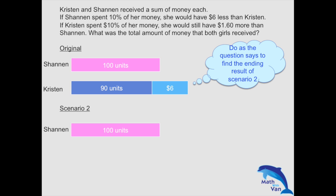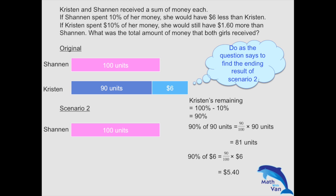Shannon — nothing has happened in scenario 2, so she stays the same. For Kristen, what is 90% of 90 units? That works out to 90/100 × 90 units, which is 81 units. Likewise, what is 90% of $6? That works out to $5.40. So after scenario 2, Kristen has 81 units plus $5.40. And we were told she would have $1.60 more than Shannon, so that difference is $1.60.